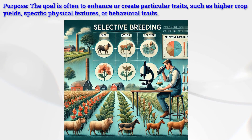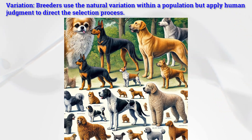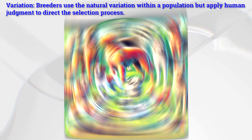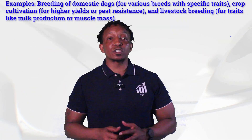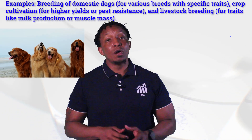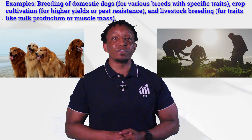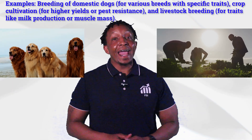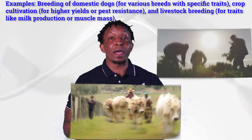The purpose of artificial selection is to enhance or create particular traits, such as higher crop yields, specific physical features, or behavioral traits. Breeders use the natural variation within a population but apply human judgment to direct the selection process. Examples include breeding of domestic dogs for various breeds, crop cultivation for higher yields or pest resistance, and livestock breeding for traits like milk production or muscle mass.